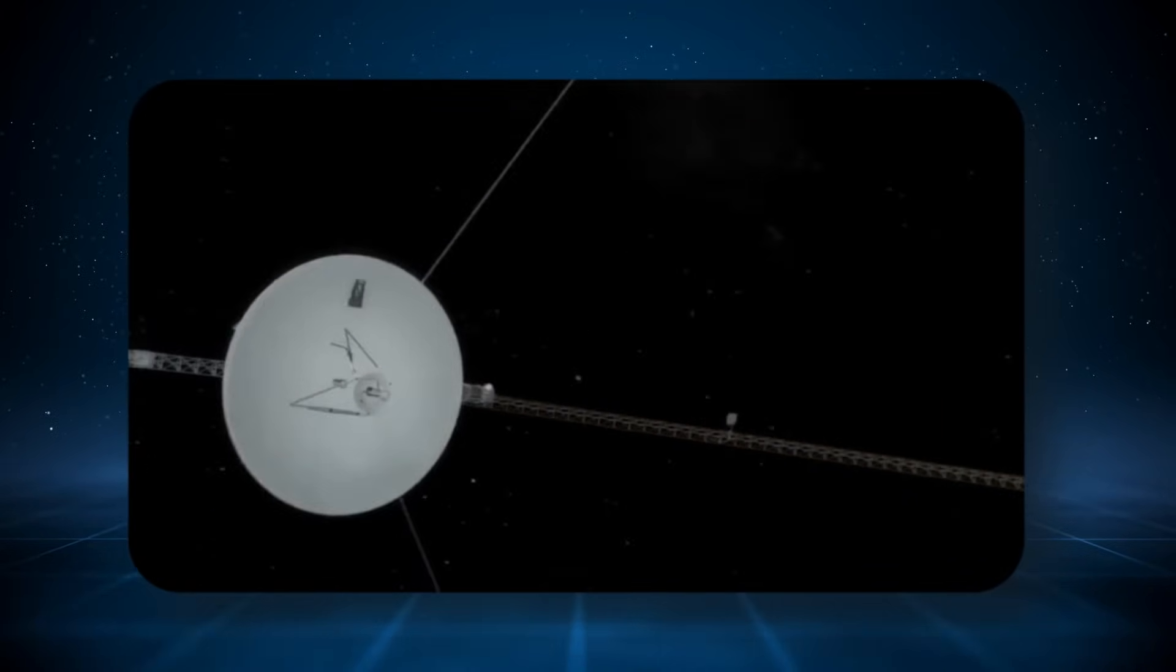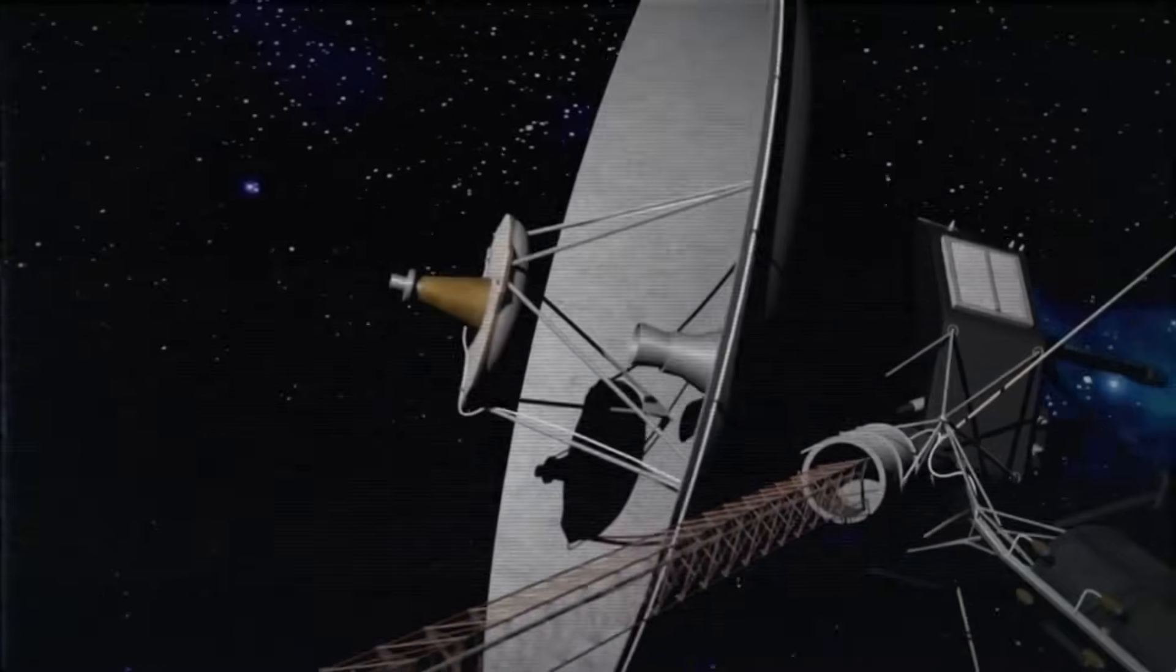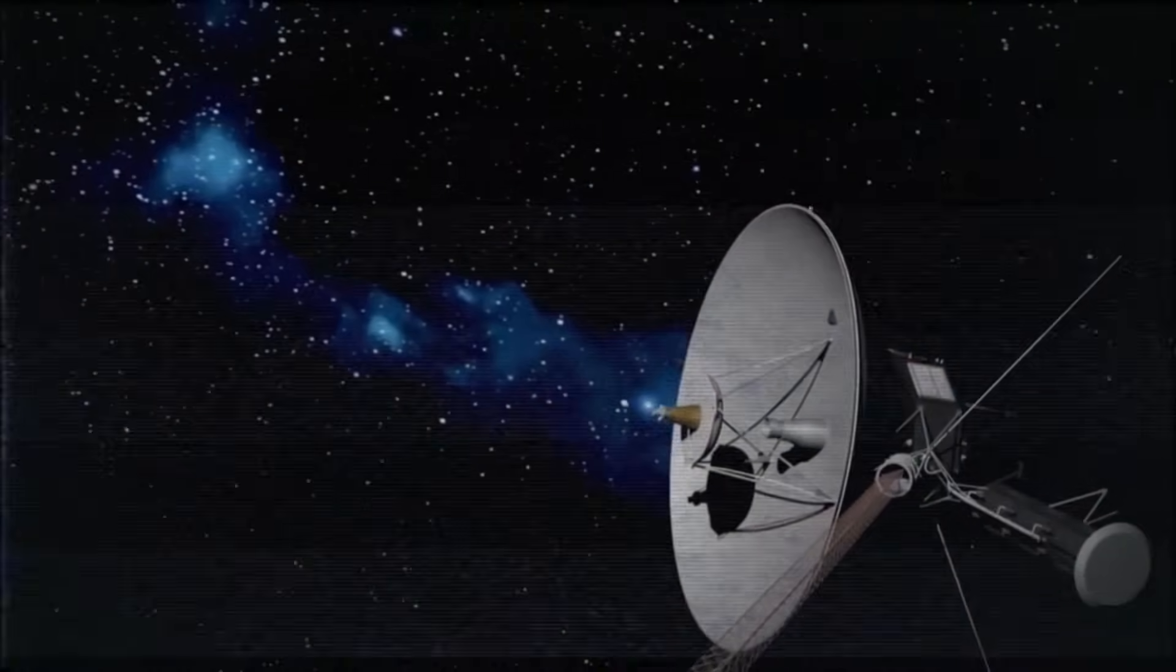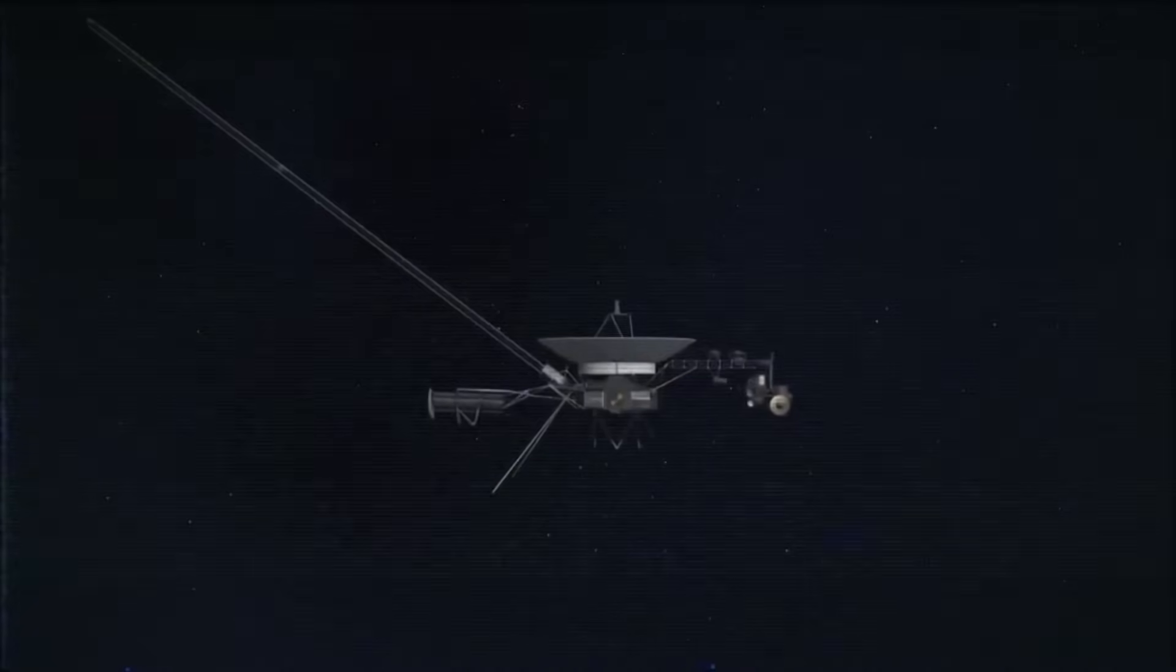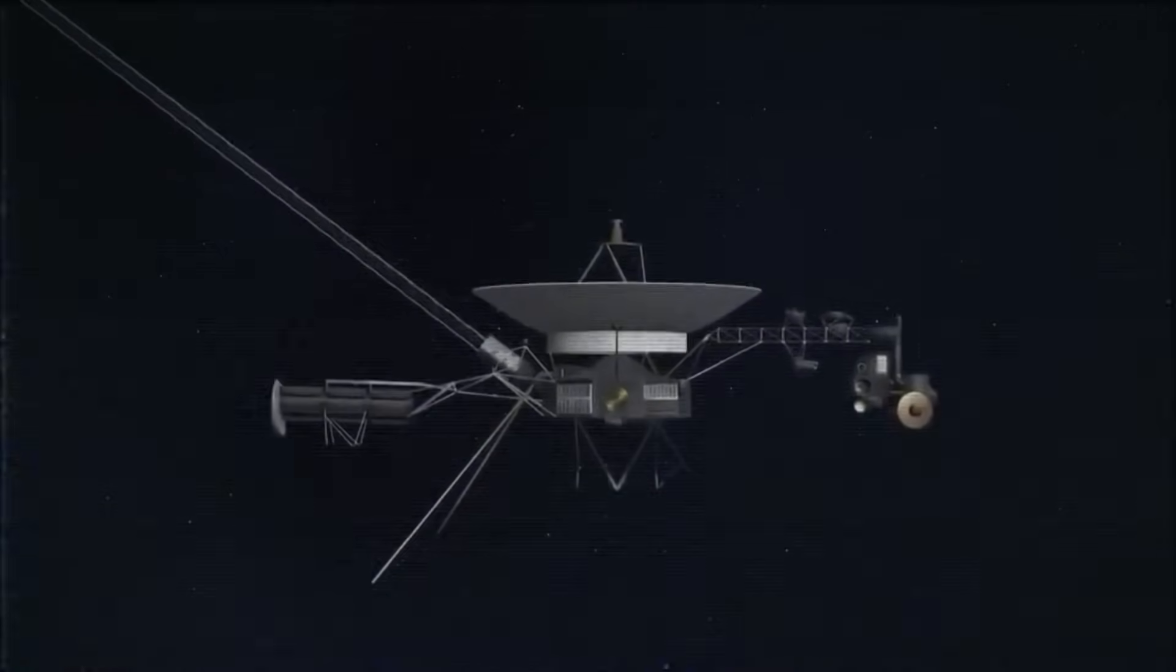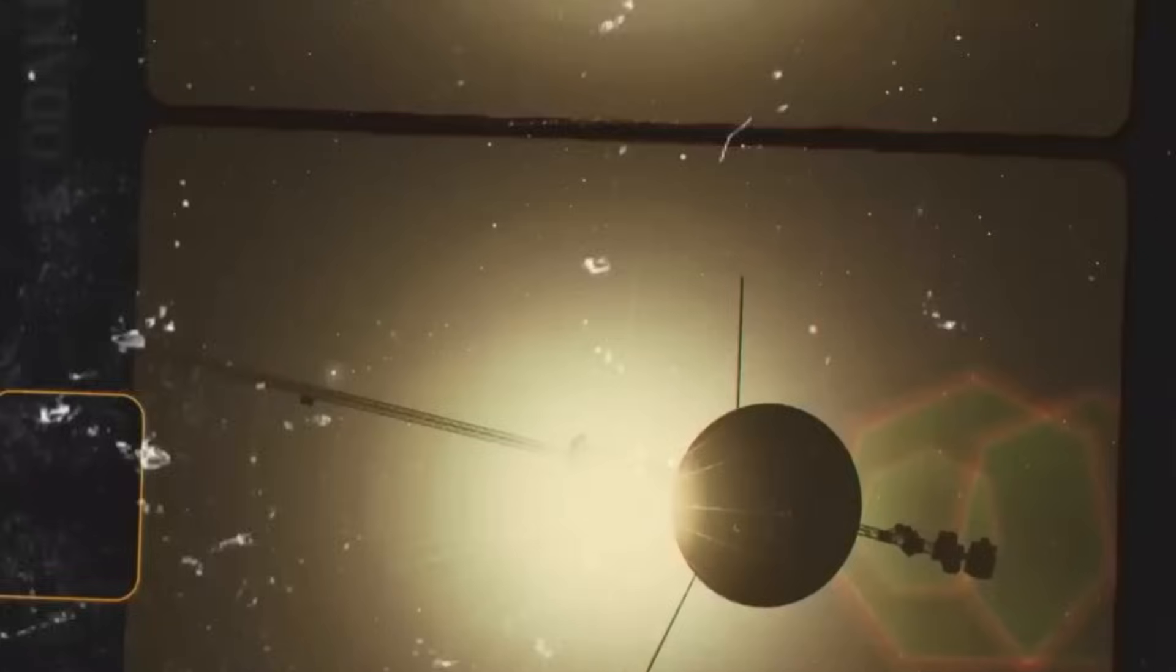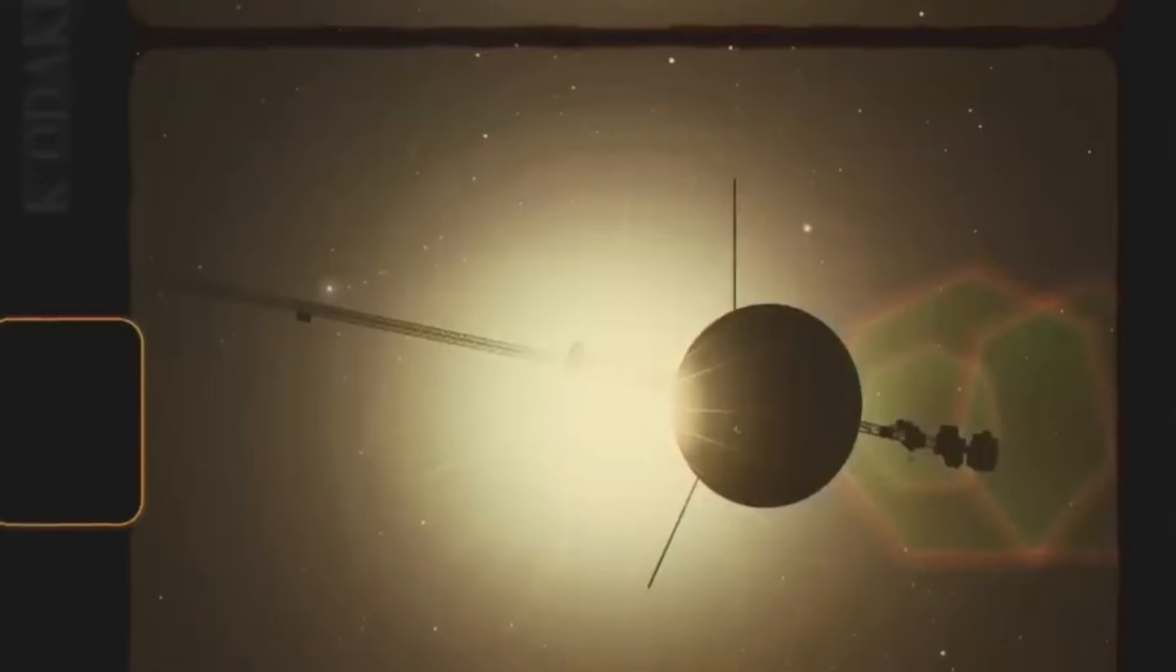Voyager 1 had been silent for months prior, drifting without useful telemetry, its instruments waning in power. The expectation was that it would go dark entirely. Teams had been preparing to decommission its monitoring. And then, out of that darkness, it sang. Some saw that timing as coincidence. Others saw it as deliberate, a final gift before the long silence. And in that context, the content of the message became even more haunting.